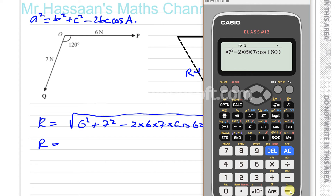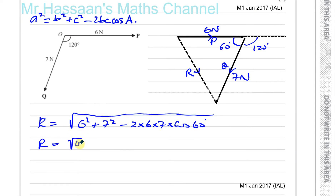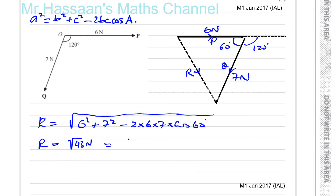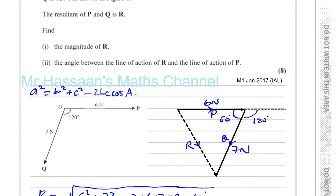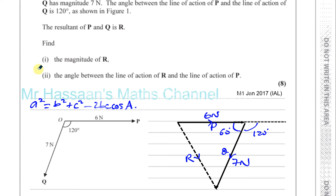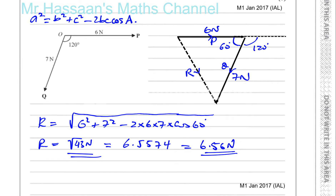Plugging into the calculator gives the square root of 43 newtons. Written to 3 significant figures, that's 6.56 newtons. Because G is not involved, you should use 3SF, though the exact form root 43 newtons is also perfectly fine. The question doesn't specify rounding, so either root 43 N or 6.56 N is acceptable. That's part one done.